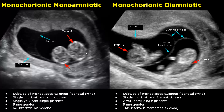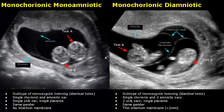Monozygotic twinning is further subdivided based on the number of chorionic and amniotic sacs. Its first subtype is monochorionic-monoamniotic, in which there is only one chorionic sac and one amniotic sac. Only one yolk sac and one placenta will be present. The twins will be identical with the same gender. No intertwin membrane will be seen between the twins.